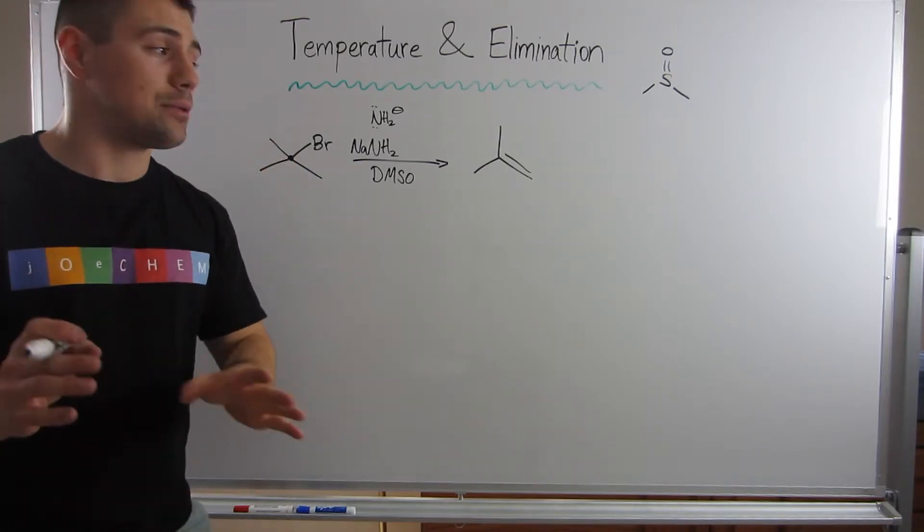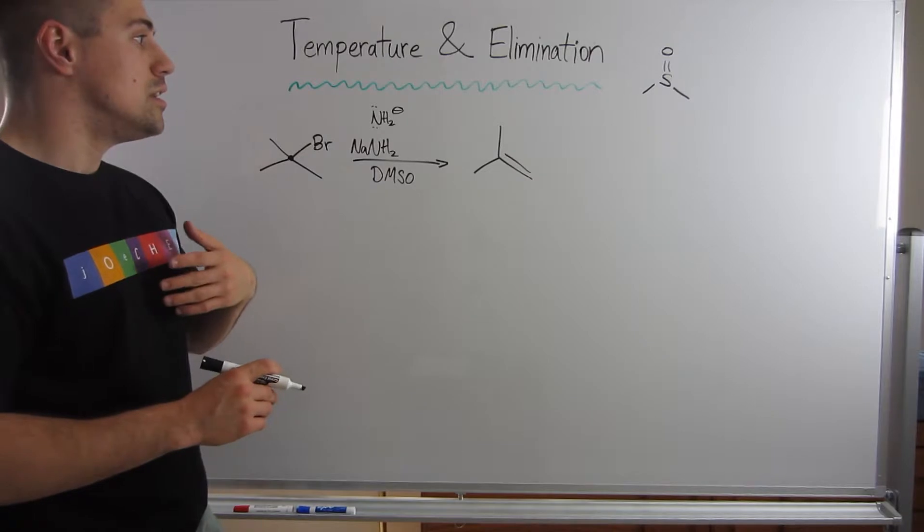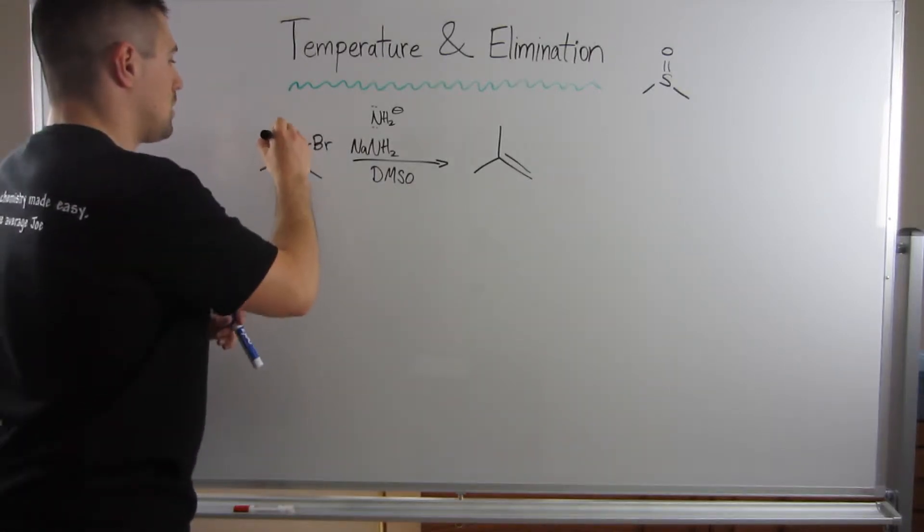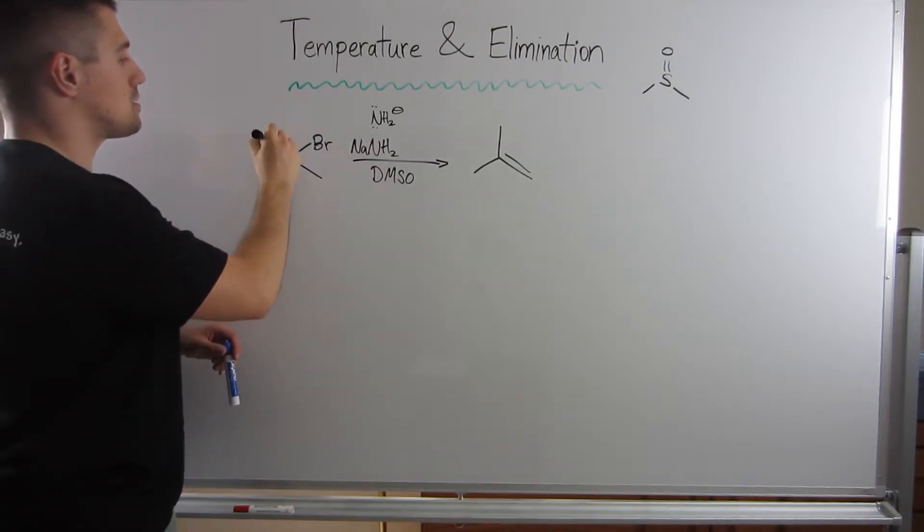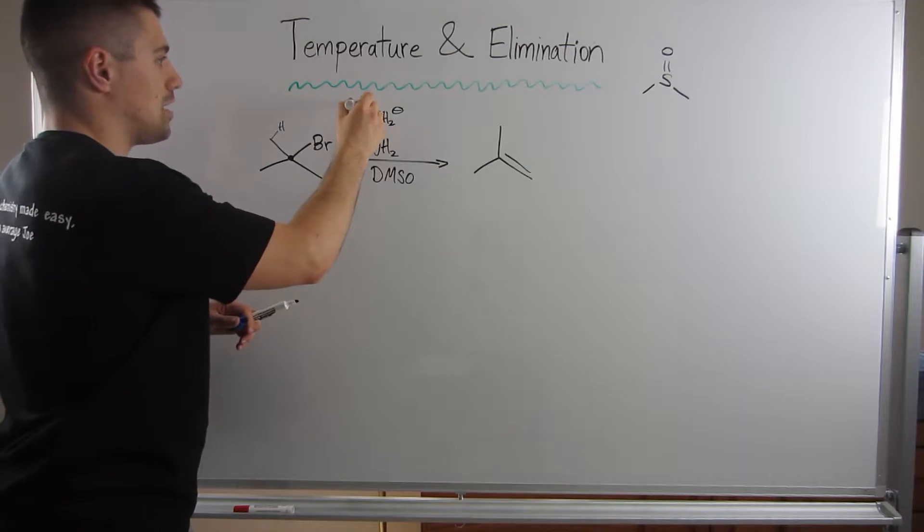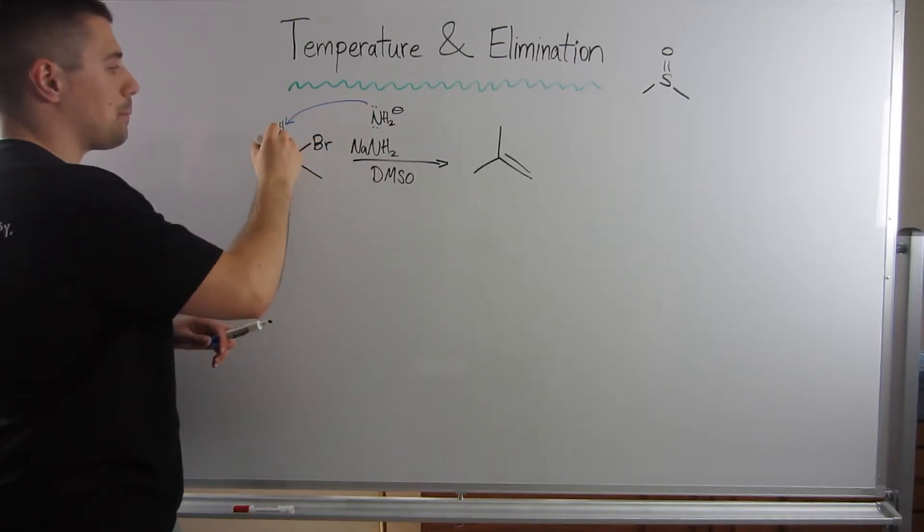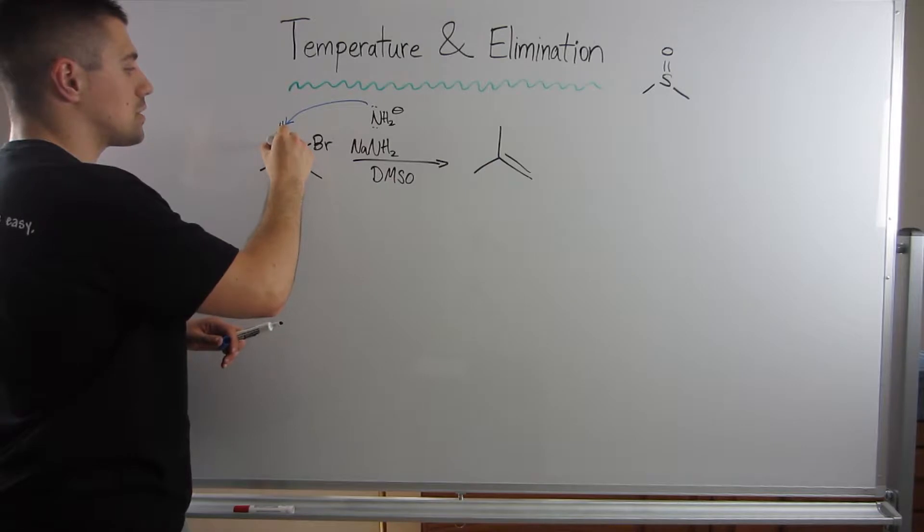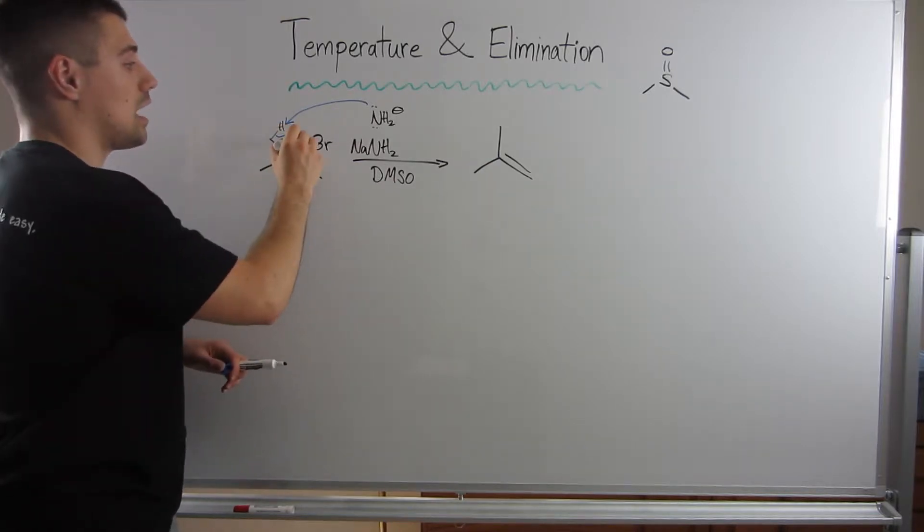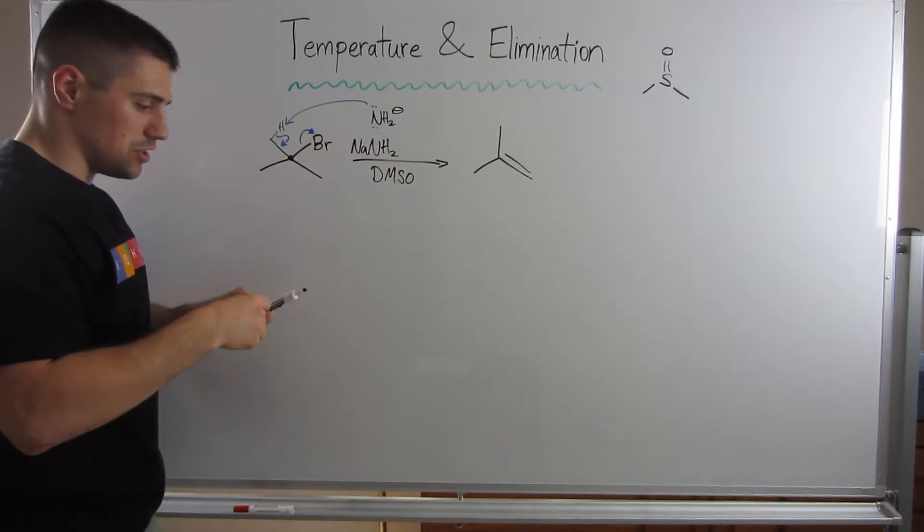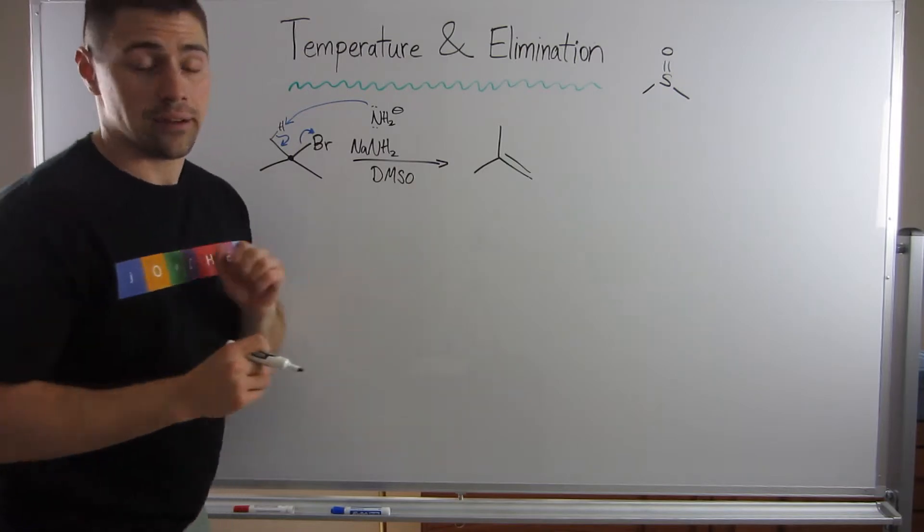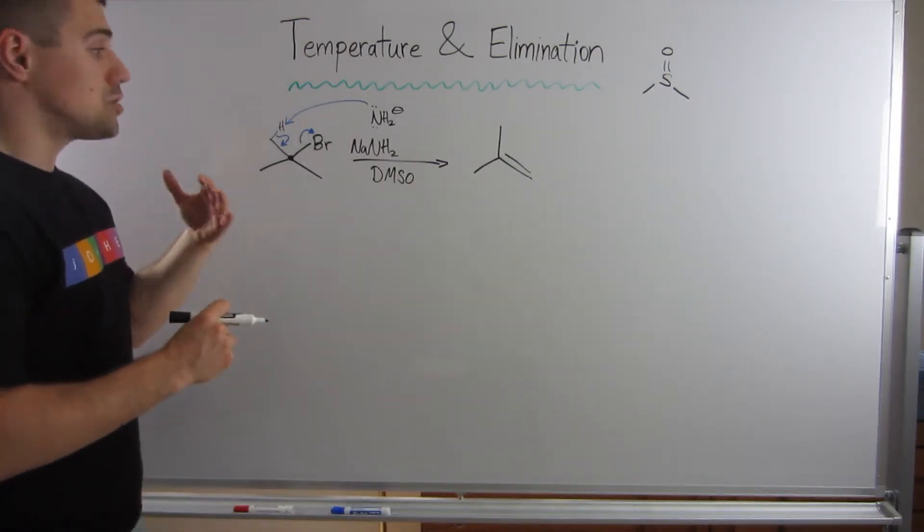Let's mechanistically show what's going on because it's going to help explain what is happening. I'm symmetrical here, so it doesn't matter which H I decide to rip off. My NH2 minus will rip the proton off. As that's happening, these electrons in this bond swing down, form a double bond. I'm gonna break the octet rule unless I eject the leaving group, so we're messing with three bonds all at once and we produce our alkene product.